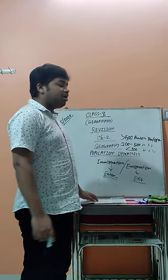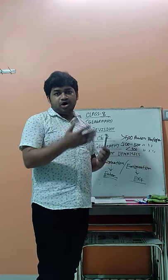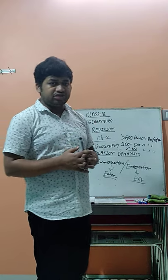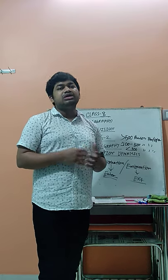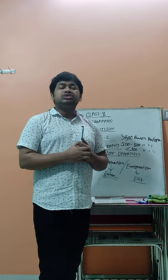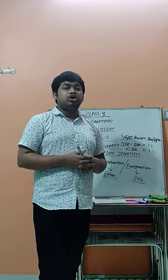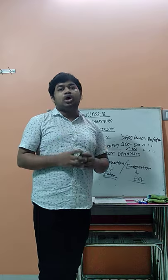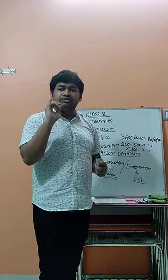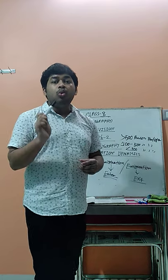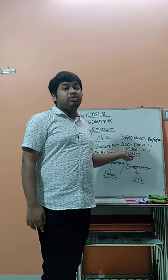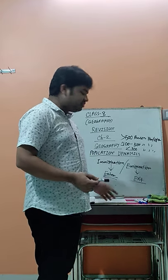Now, regarding the factors affecting population distribution: there are physical factors such as landform, climate, and water supply, which I already discussed in previous classes. There are also non-physical factors such as government policy, religious beliefs, transportation, and communication, which also affect population distribution. For the exam, you need at least 4 points from physical factors and 4 points from non-physical factors — don't forget to include sub-points with each. These answers have already been taught with sub-points, so write your answers accordingly.